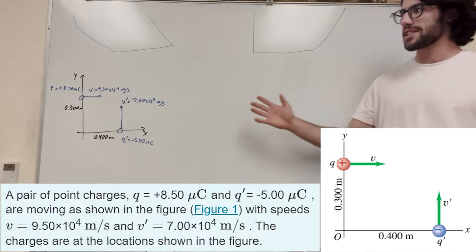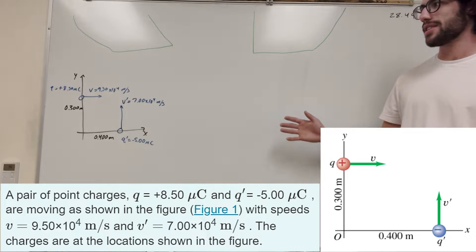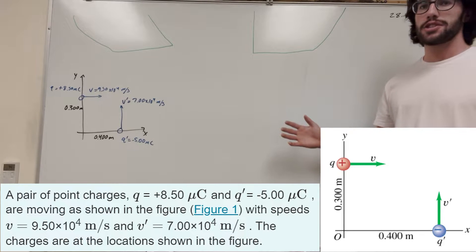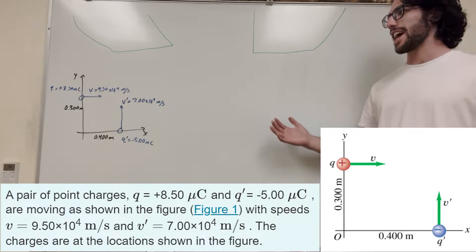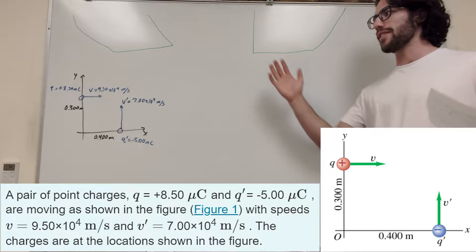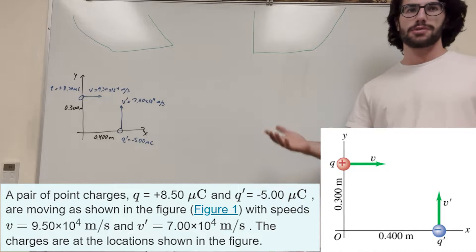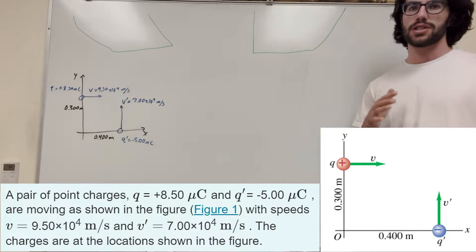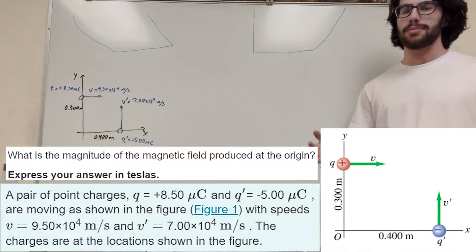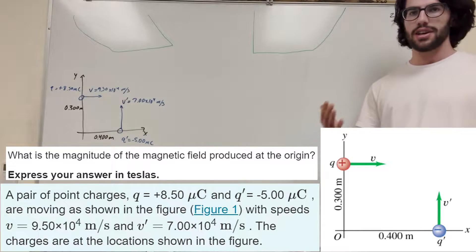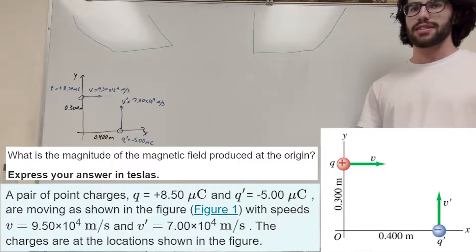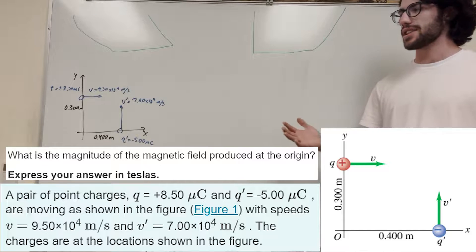What's up, Kyle gang? Alright, so we got this physics problem here. We got these two charges on this axis and they're both having this velocity. The first part wants us to find the magnitude of the magnetic field at the origin.